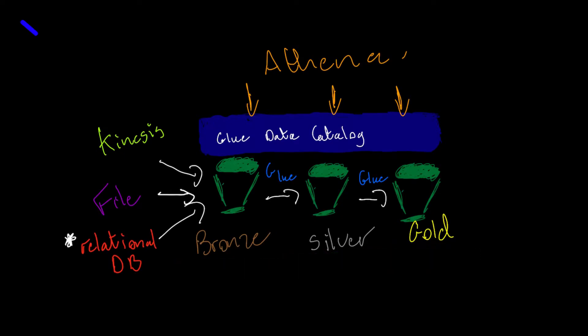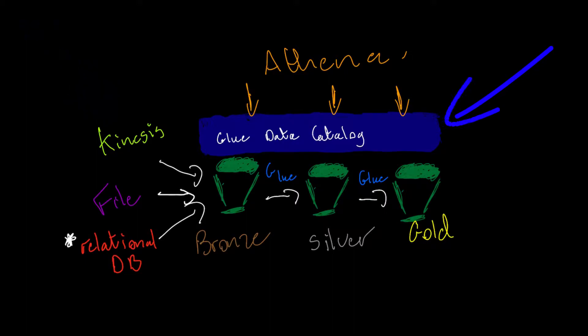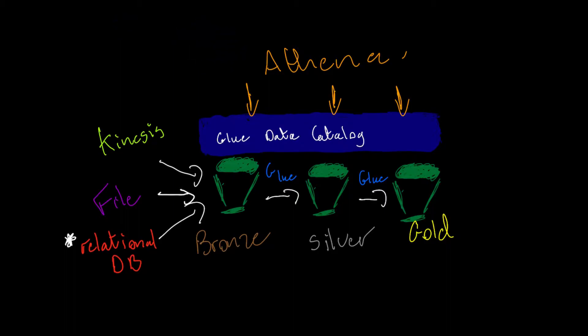Each one of the data sources that we either create or use within AWS will register in the Glue Data Catalog, which acts as our metastore for information around schemas and that underlying data. Athena is essentially a Presto service that lets us query that data at scale — petabytes of scale.